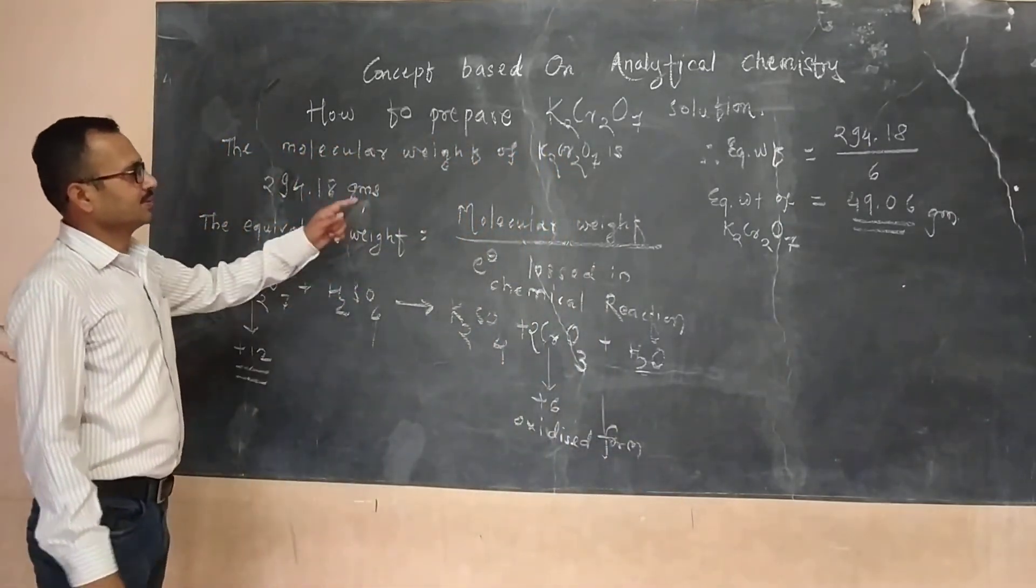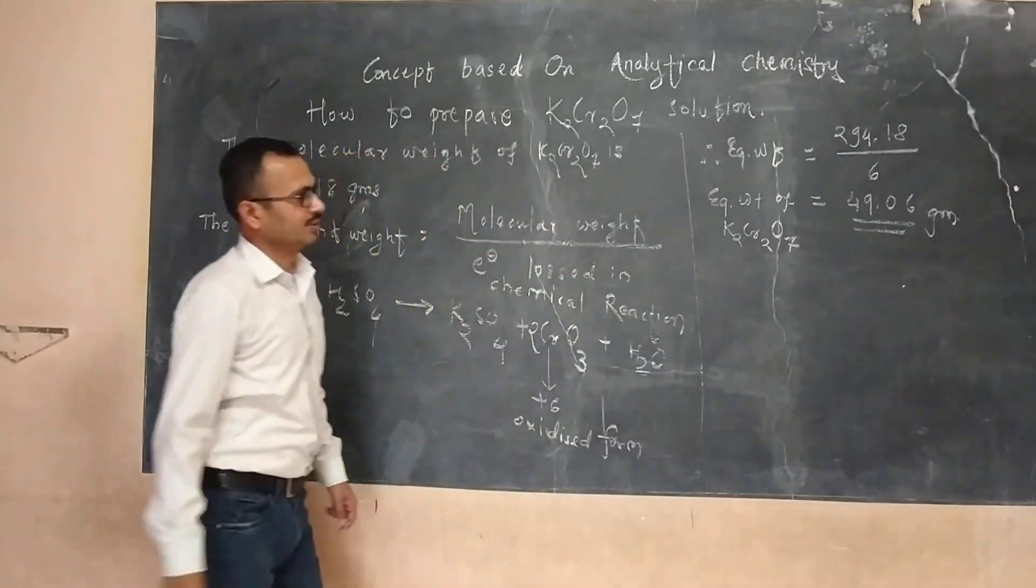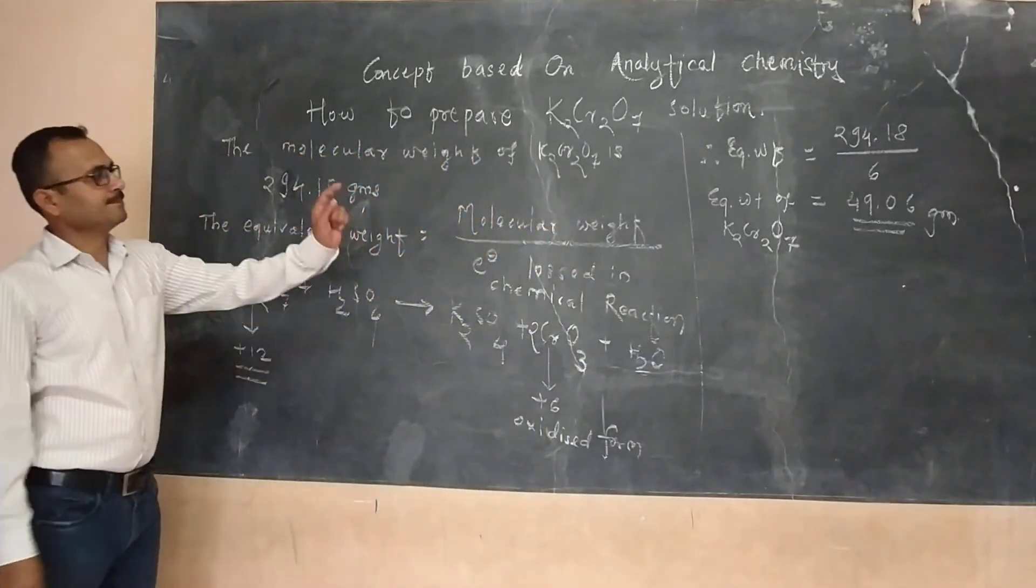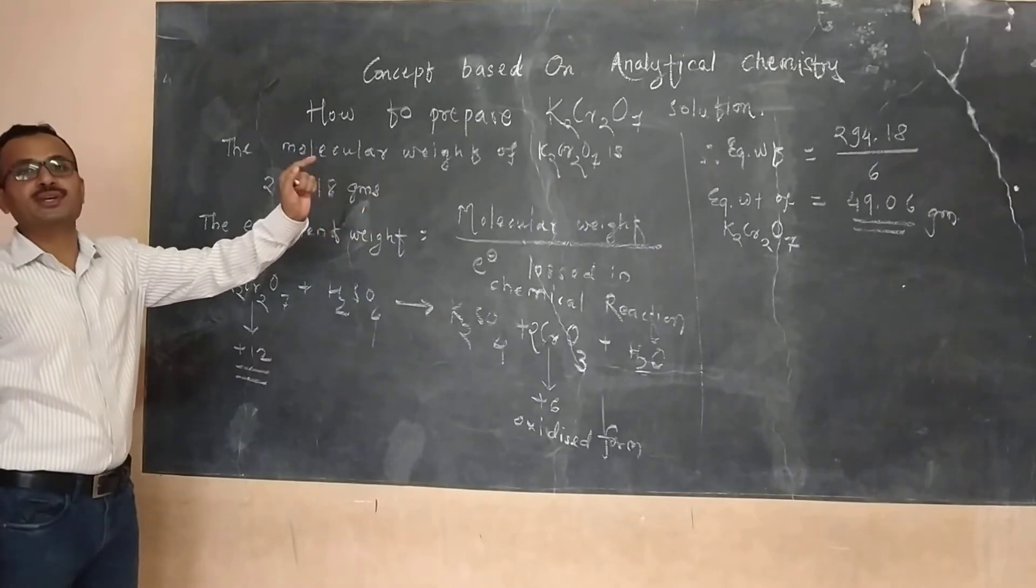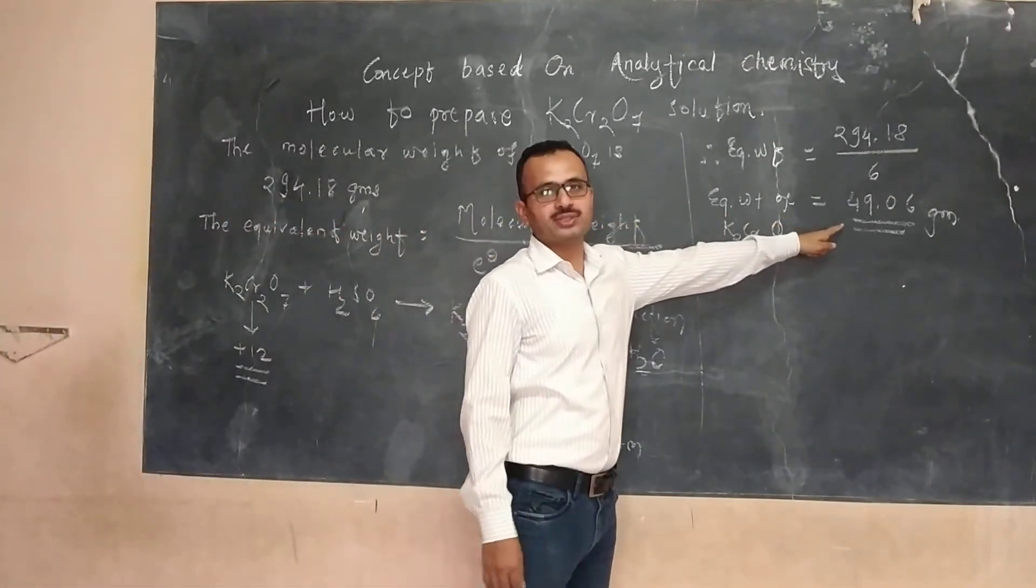So this is all the equivalent weight of potassium dichromate, potassium dichromate, is 49.06 grams.